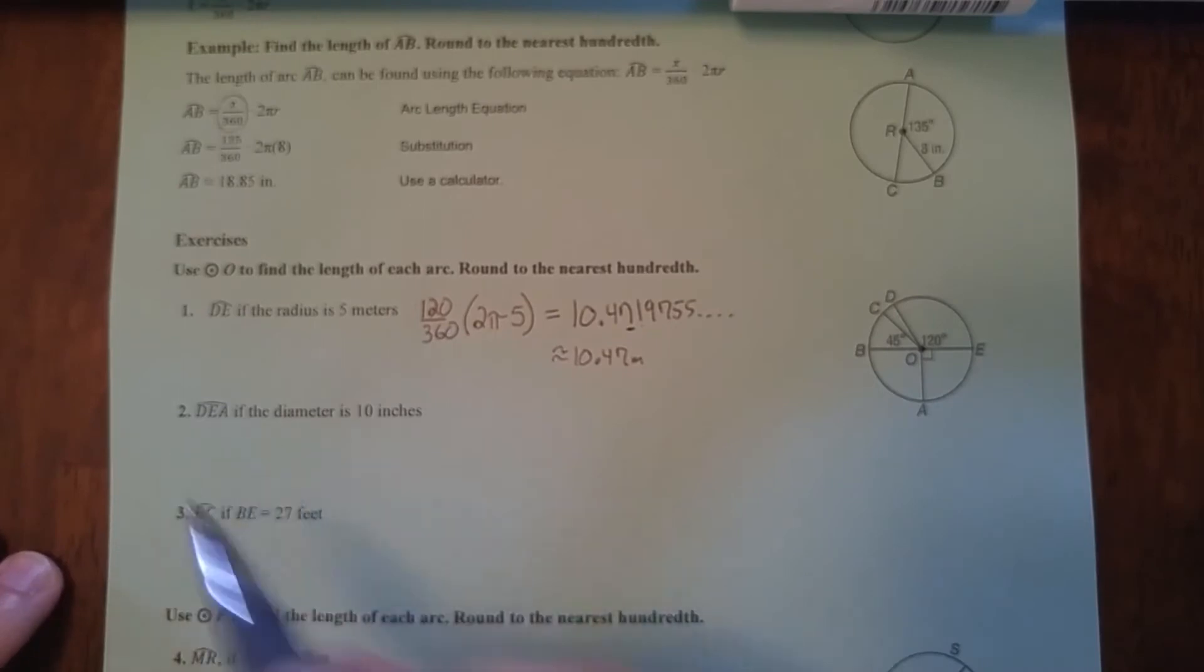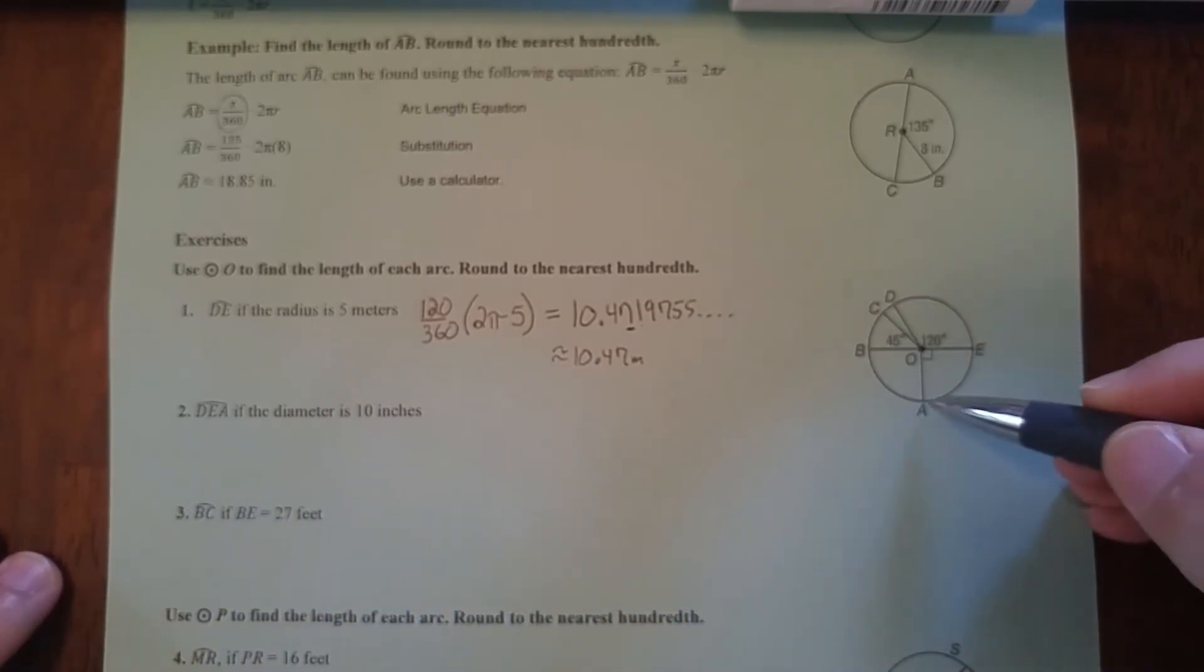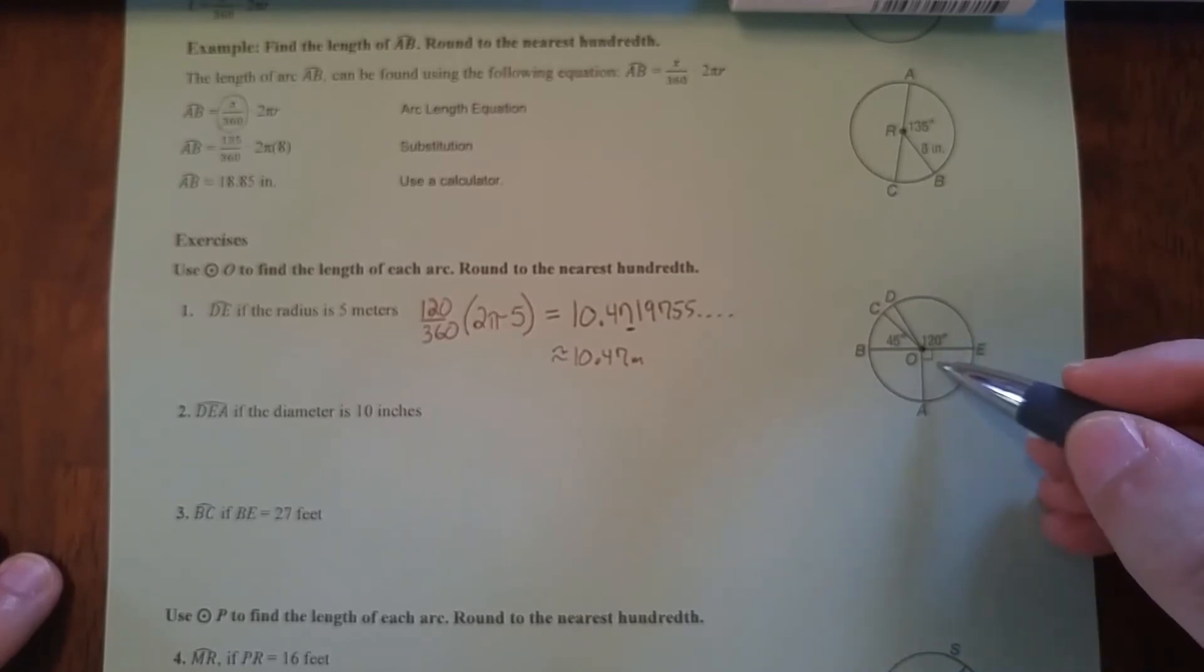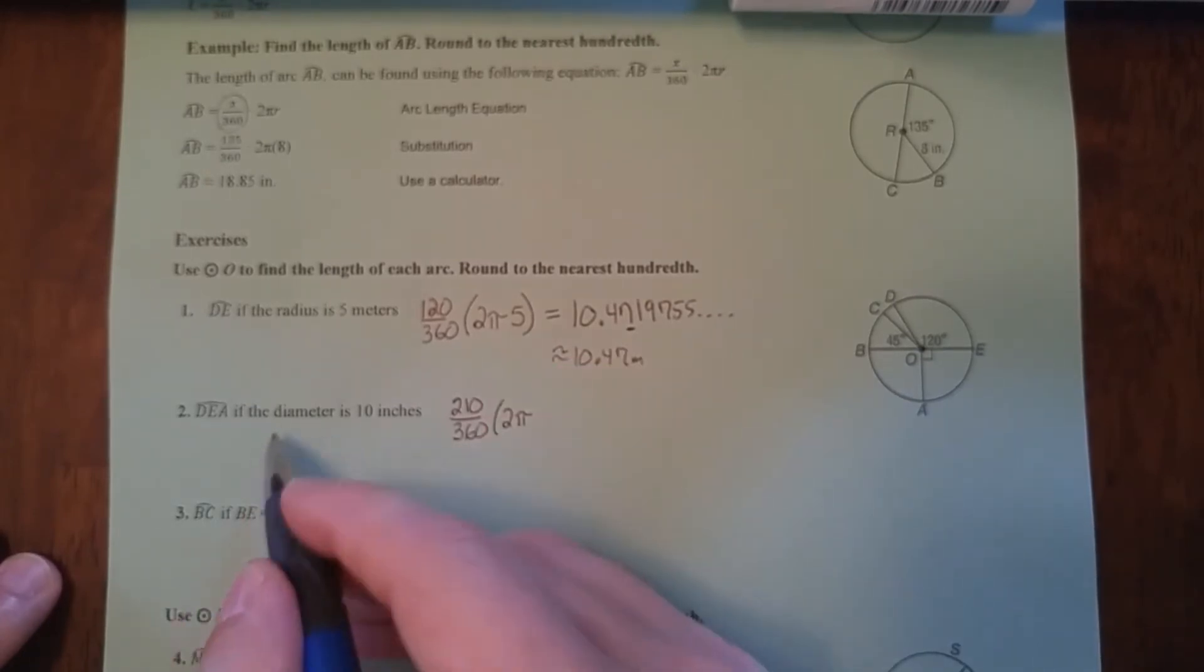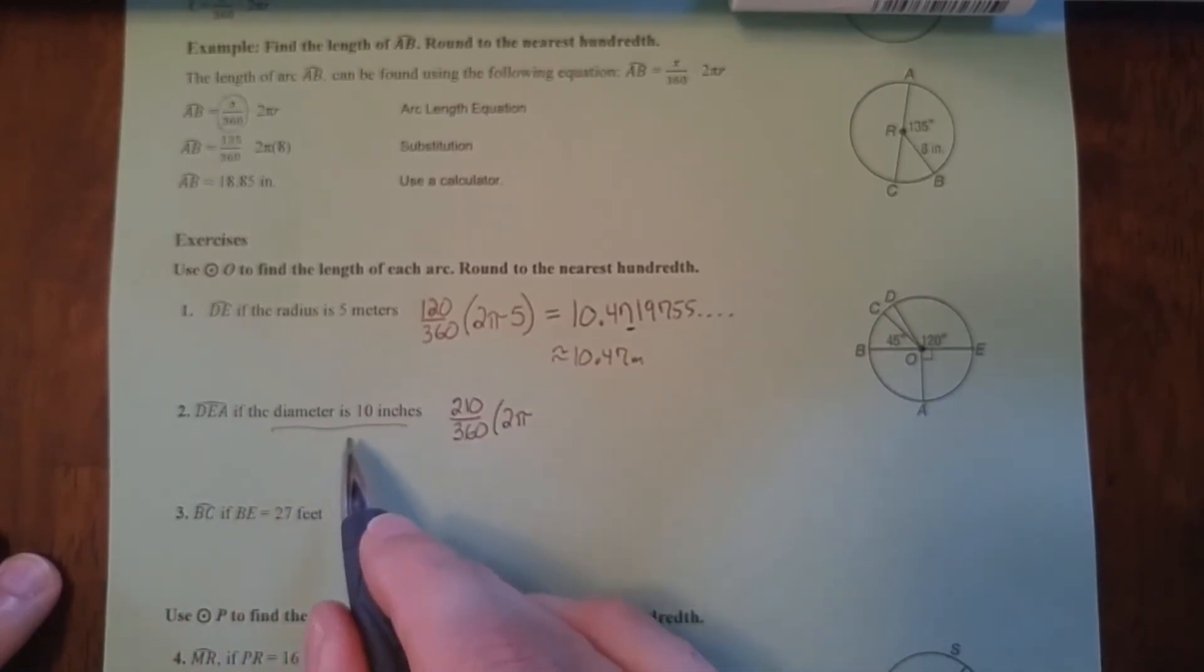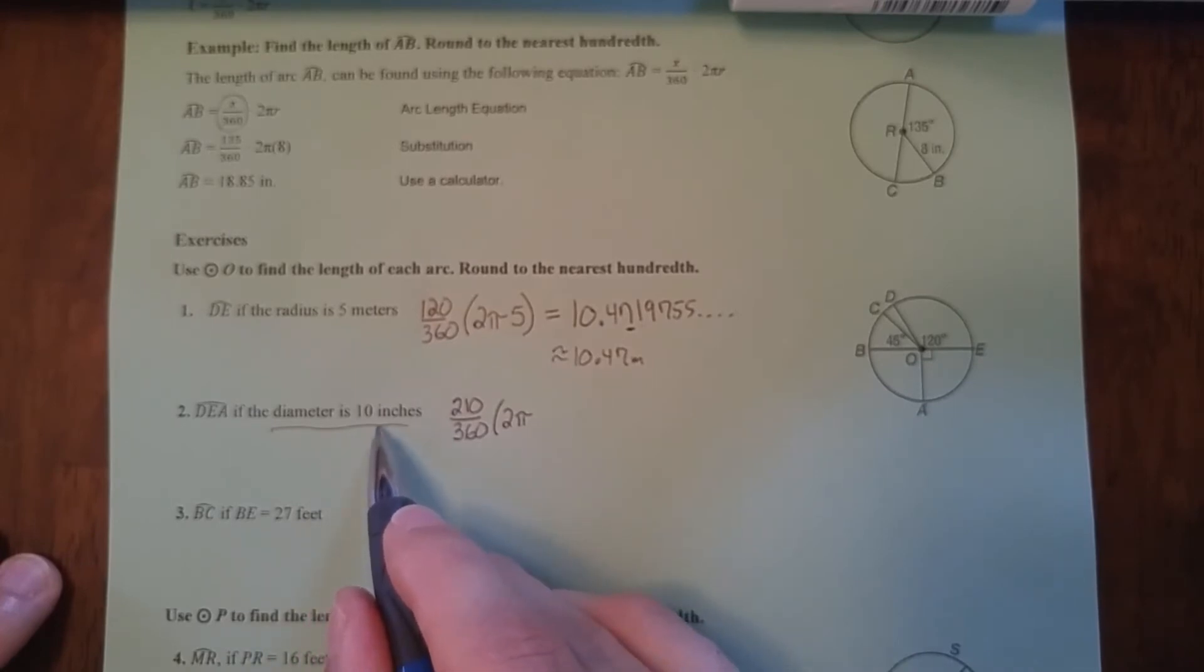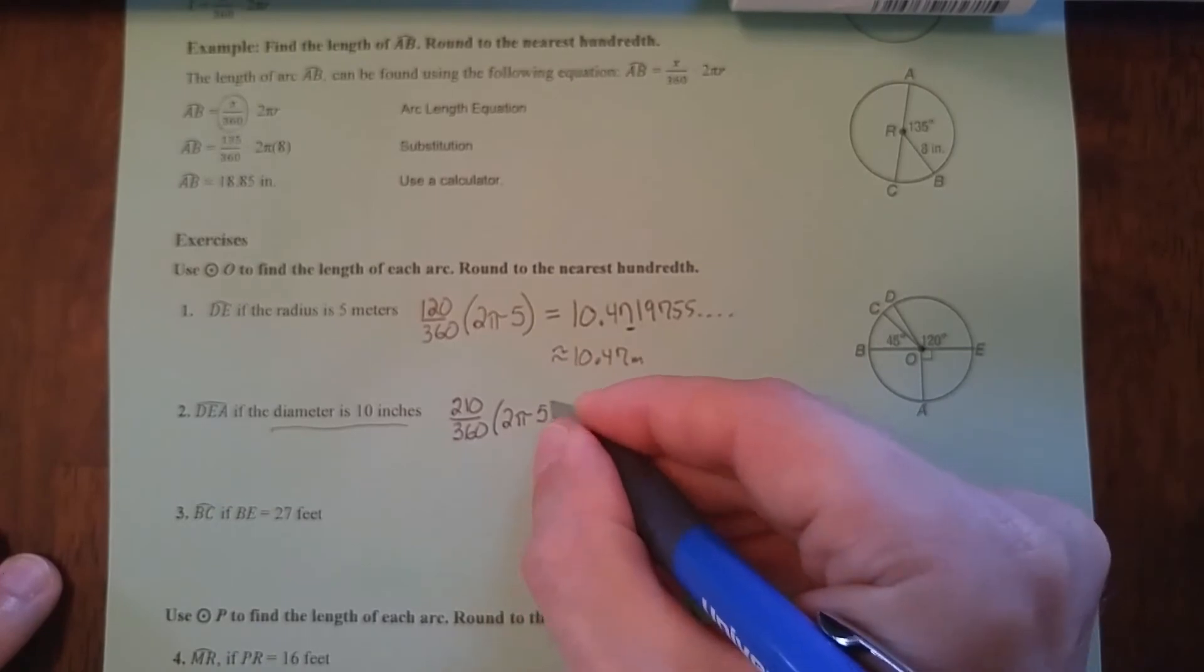Let's look at this one now. Arc DEA. Here's D, here's E, here's A. So this is 120 degrees. And because this box is right here, we know this is 90 degrees. So DEA is going to be 120 plus 90. So we've got 210 over 360 times 2πR. Now see here, they say the diameter is 10 inches. Well, remember diameter is twice the radius. So divide this by two. You find out the radius is five inches.